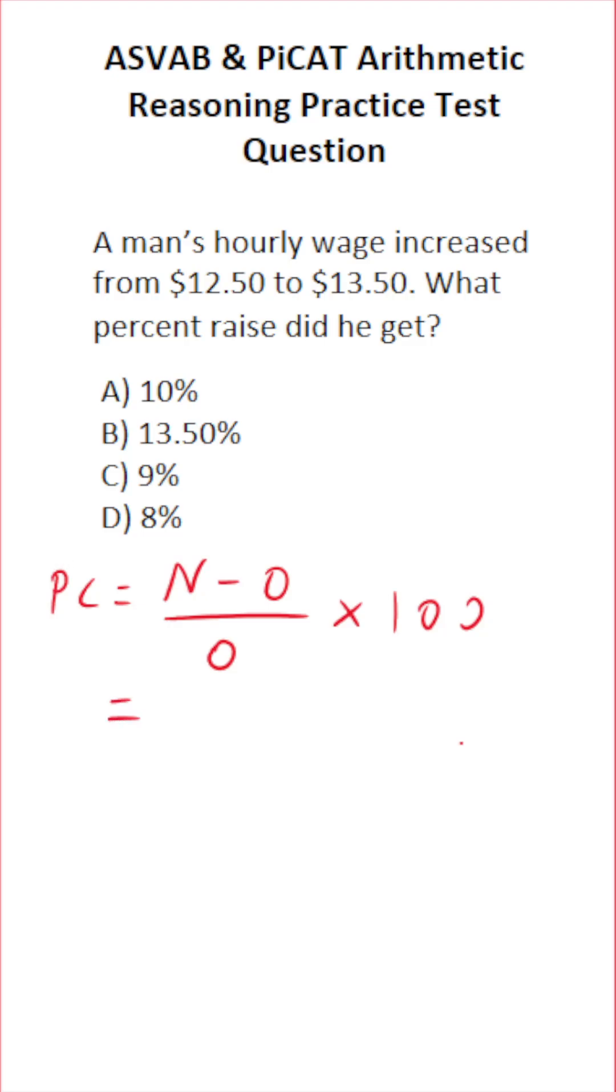His new hourly wage is $13.50. His old hourly wage was $12.50. We're gonna divide this by $12.50 and multiply it by 100 to convert it to a percent.